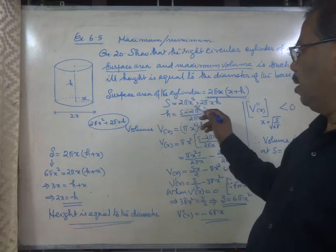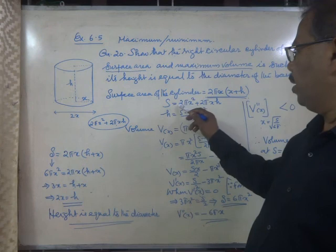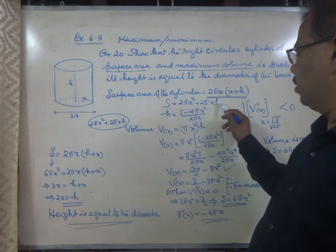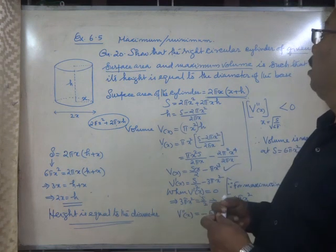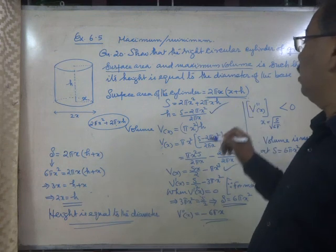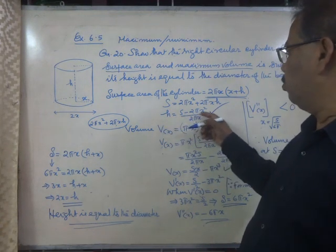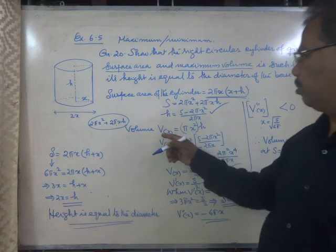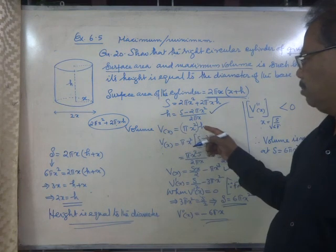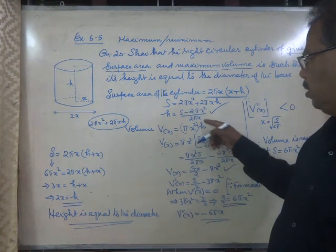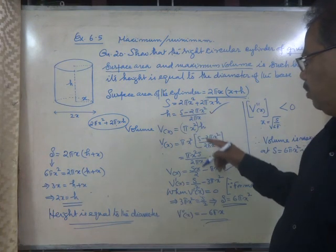Now we can find a relation for height from this total surface area. S minus 2πx² will be equal to 2πxh. From which we get a relation for h: h equals (S minus 2πx²) by 2πx. Now volume is equal to base area multiplied by height.